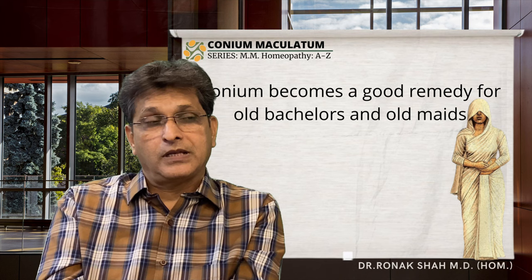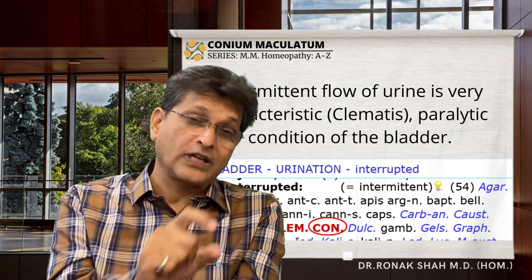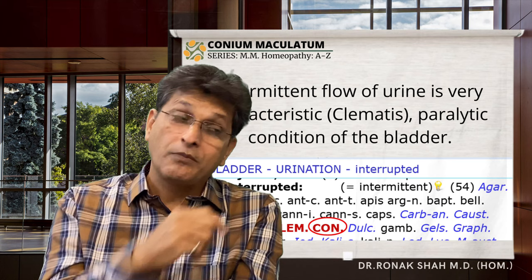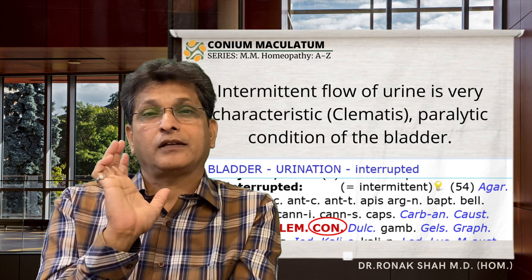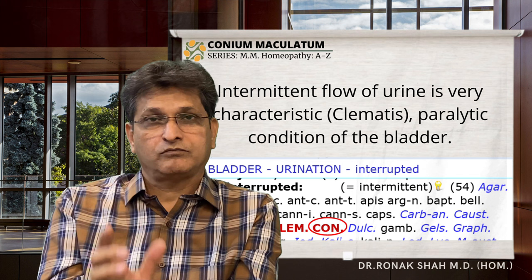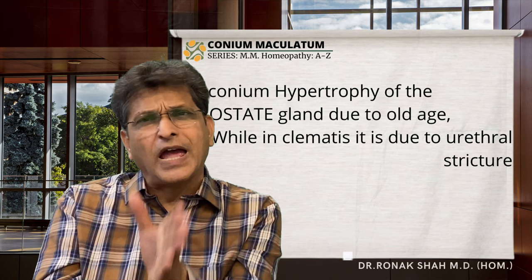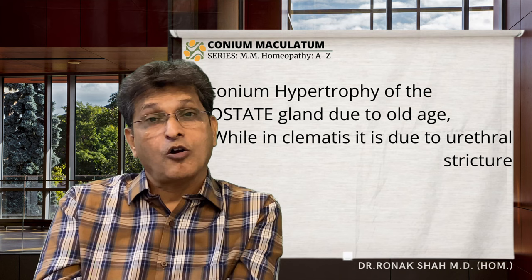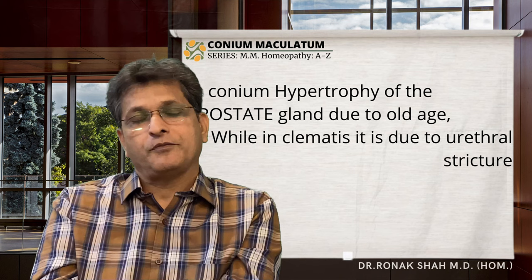Intermittent flow of urine — a very important characteristic of Conium. One must think about it when paralysis of the bladder is present; the rubric is 'urination — interrupted.' This symptom often occurs in hypertrophy of the prostate gland due to old age, and Conium helps. In other cases it may be due to urethral stricture.